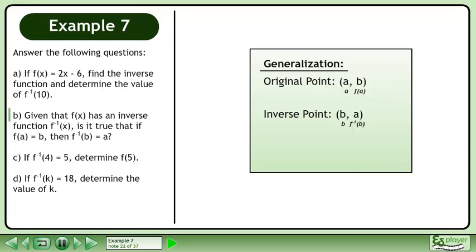In the original point, the y coordinate of b is equivalent to f at a. In the inverse point, the y coordinate of a is equivalent to f inverse at b. When f at a equals b, f inverse at b equals a.